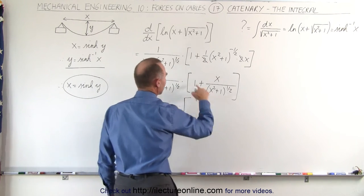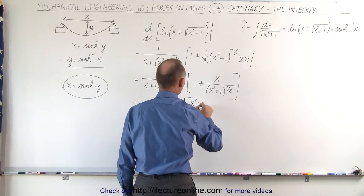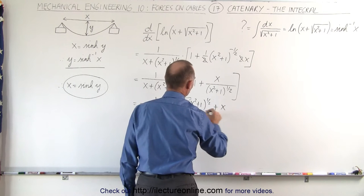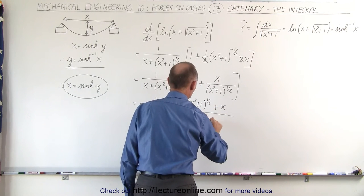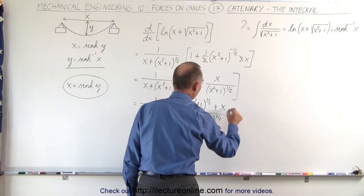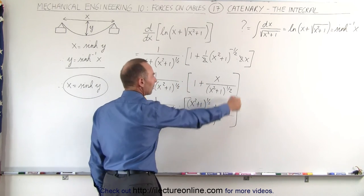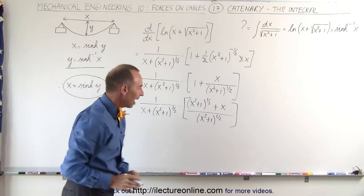And here we end up with an x squared plus 1 to the 1/2 power, plus x divided by the common denominator of x squared plus 1 to the 1/2 power. Notice that if I divide the denominator into the numerator, I end up back with what I started with, so that is absolutely correct.